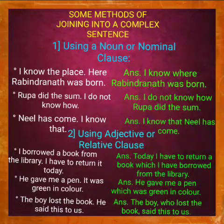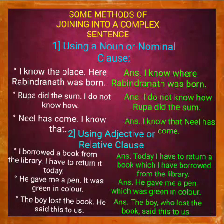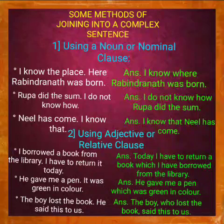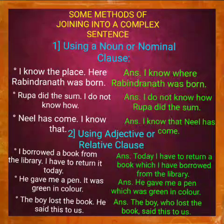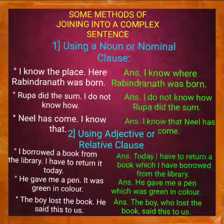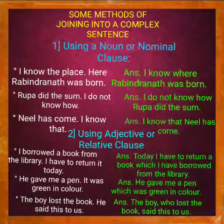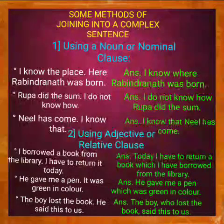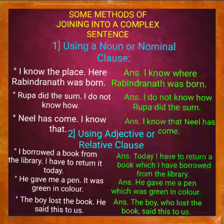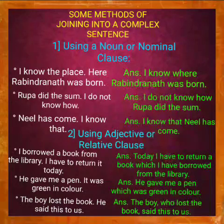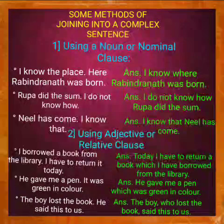Number one: noun or nominal clause. Number two: adjective or relative clause. Number three: adverbial clause. A noun clause acts as a noun in a sentence. Words like 'that', 'how', 'what', 'when', 'where', etc. can lead a noun or nominal clause. Sometimes a noun clause is used in a sentence as a subject, and sometimes it is used as an object.